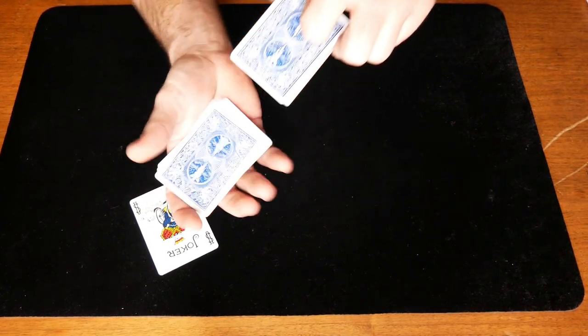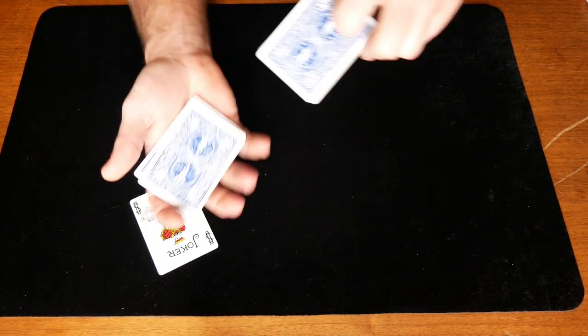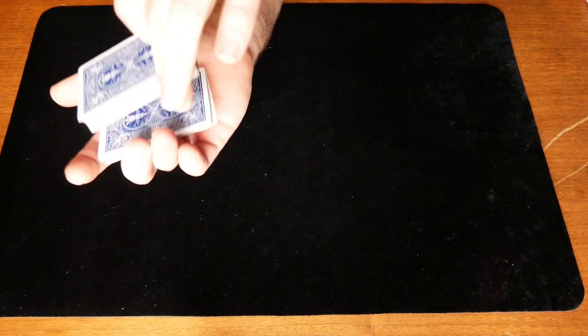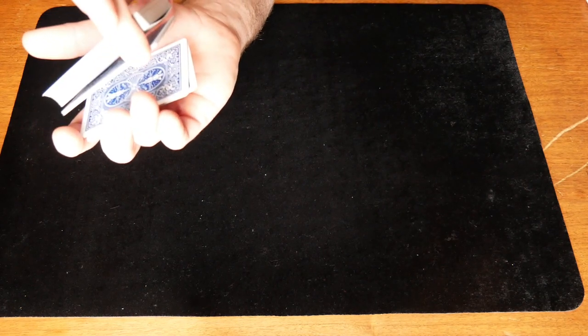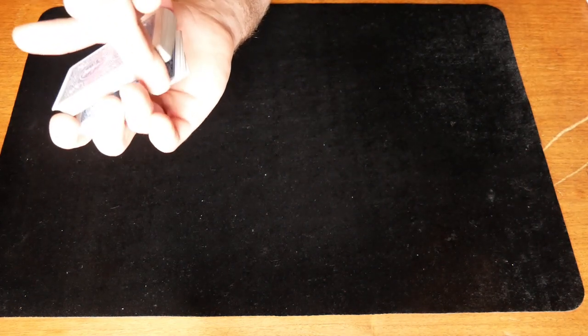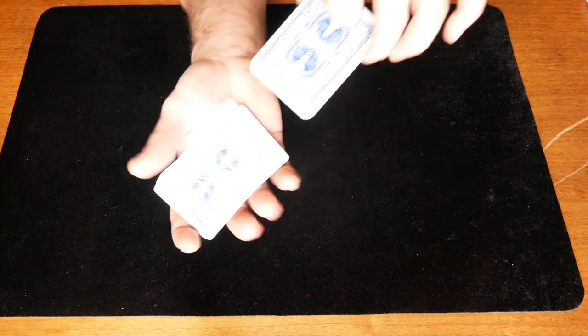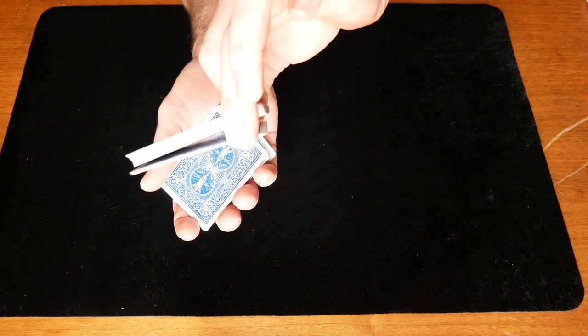And when you do the Hindu shuffle and you start shuffling off and they say stop, this is where the magic happens. They put their card back in. What you do is squeeze the top portion of the pack like that in between your two fingers, keeping their card there. And you finish shuffling off, keeping their card right there.